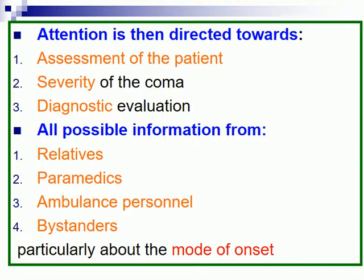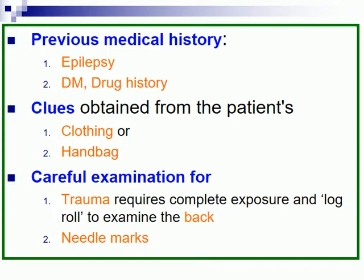All possible information should be gathered from relatives, paramedics, and ambulance personnel, particularly about the mode of onset. Previous medical history is important, including any epilepsy history and drug history. Clues may also be obtained from the patient's clothing or handbag. Careful examination for trauma requires complete exposure and log roll to examine the back.